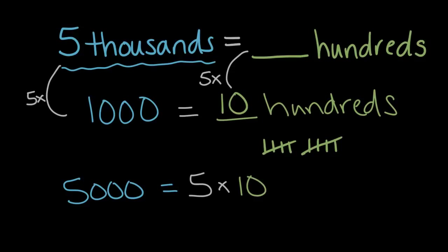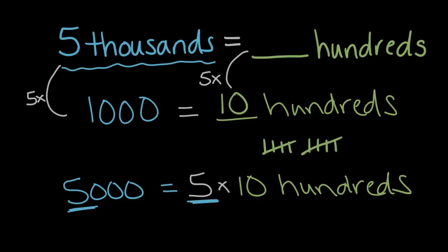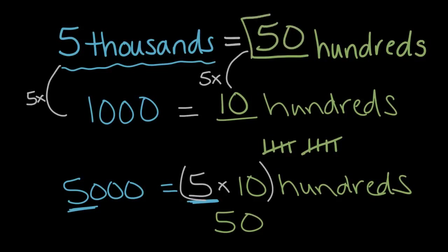So we have five thousand this time, so we have five times ten hundreds. Five times ten is fifty, so five thousand equals fifty hundreds.